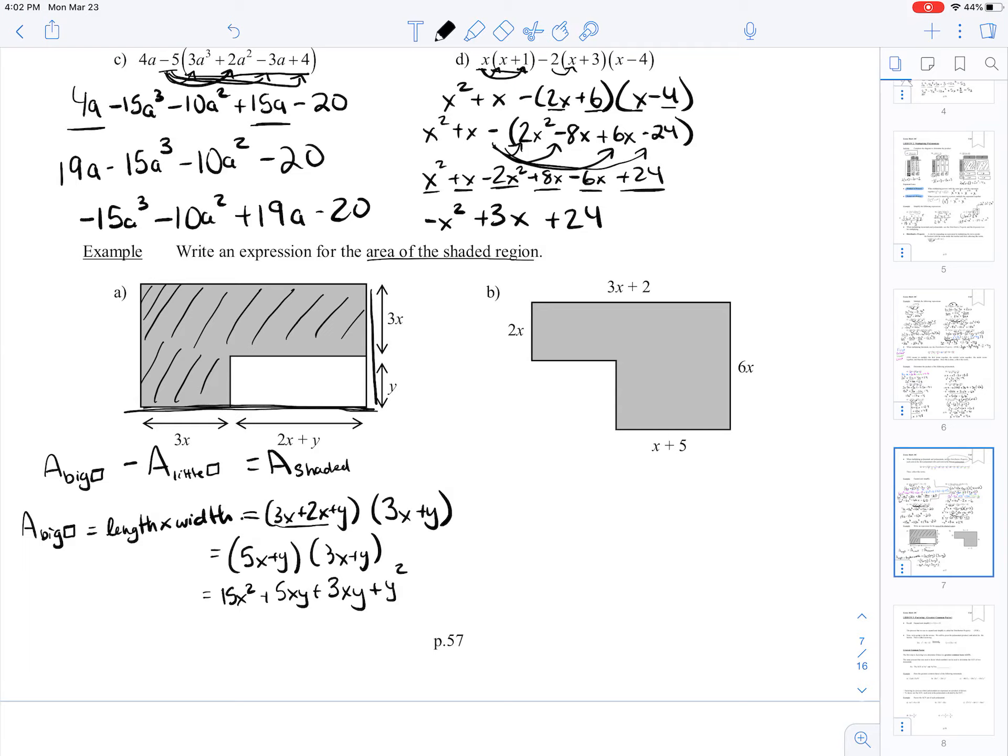My area of the small rectangle is this guy here. Again, that's length times width. But this time, it's just this portion. So that's 2x plus y times this portion, times y. I'm going to distribute my y in. Notice I'm actually going from right to left this time. It actually doesn't matter which direction you go. So I've got 2y times 2x equals 2xy, plus I've got y times y, that's y squared.